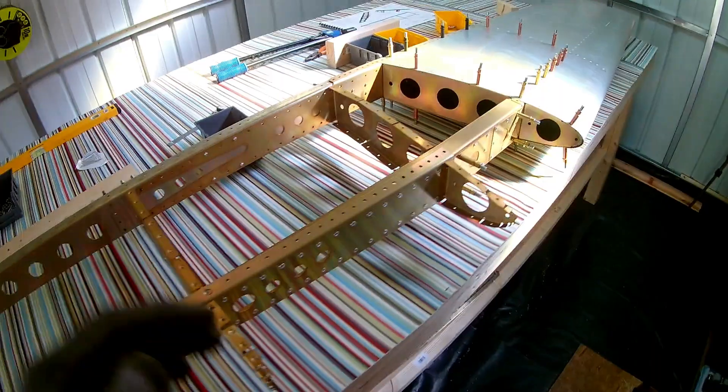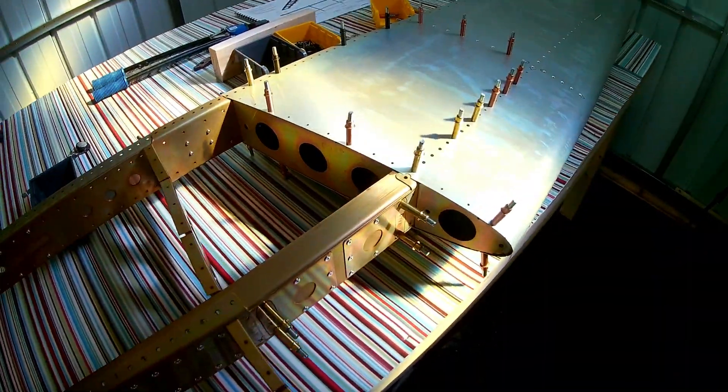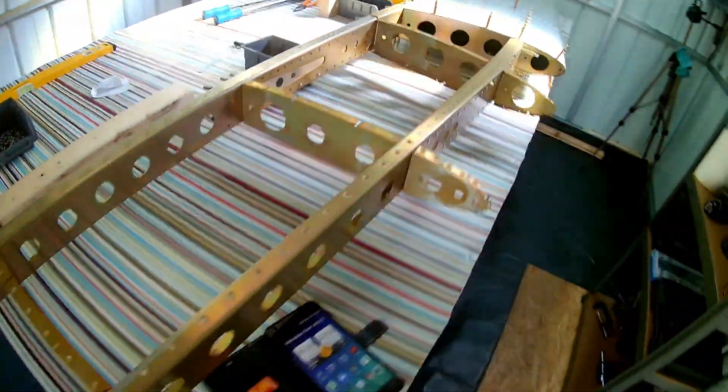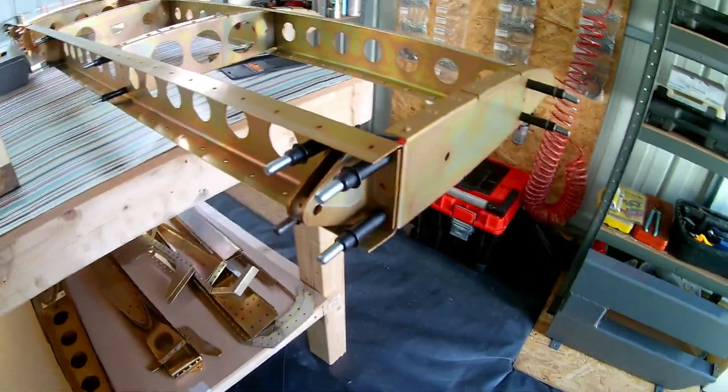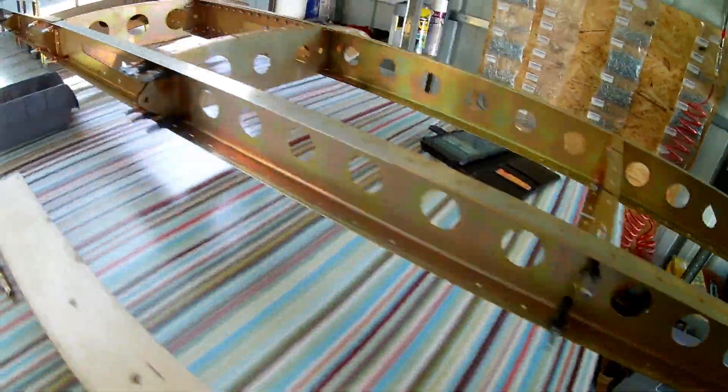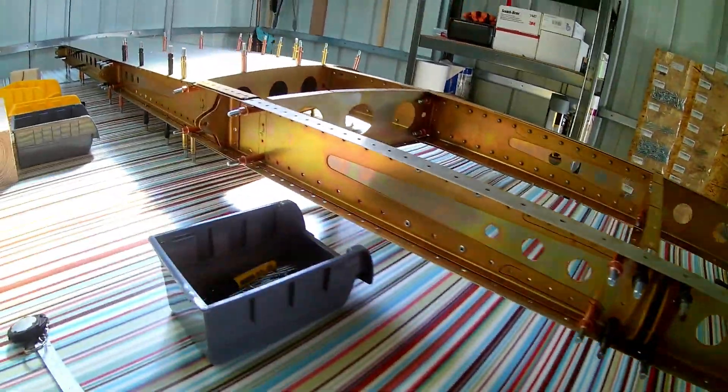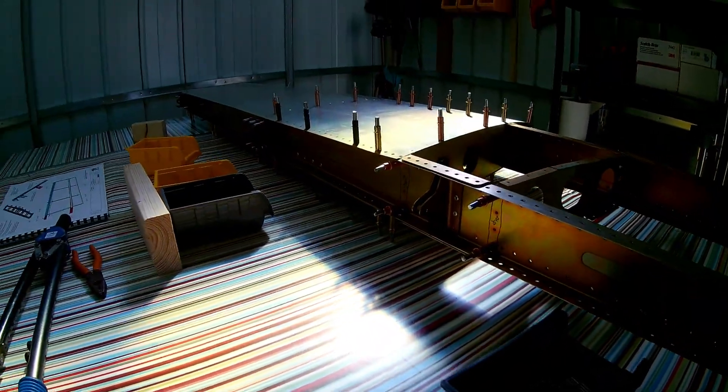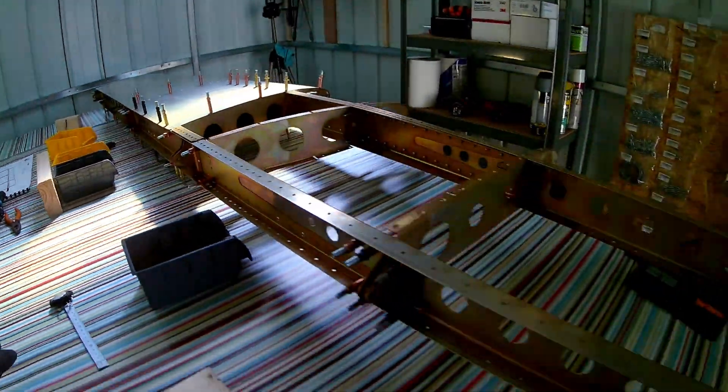I've basically cleco'd together the horizontal stabilizer. Everything is just held up using clecos apart from this main structure where I'll put in a few rivets and close everything.